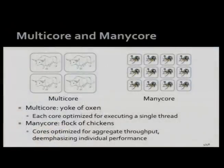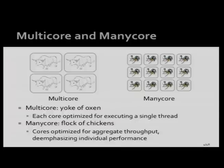What do I mean by multi-core and many-core? Seymour Cray, the famous founder of Cray Computers, used to talk about parallelism this way: you could either solve a problem with a yoke of oxen or a flock of chickens. Multi-core architectures are like a yoke of oxen — each core is optimized for executing a single thread, they're heavyweight, and for some tasks they're the best tool. Plowing a field, you want a yoke of oxen; a flock of chickens is not so good for plowing.